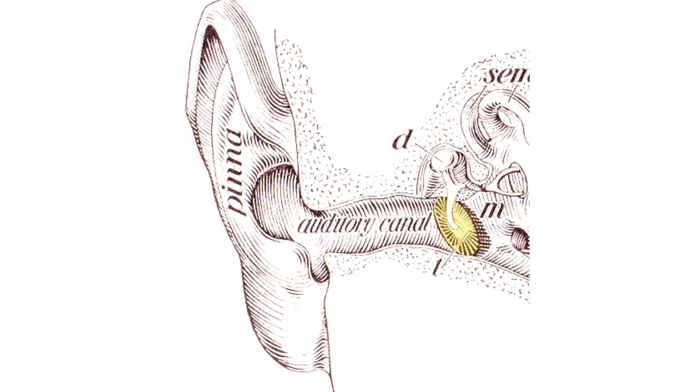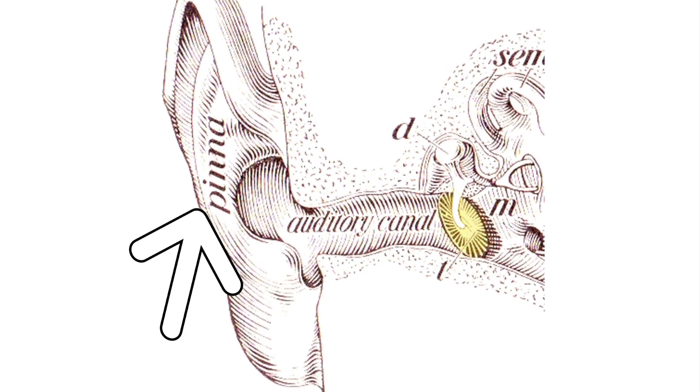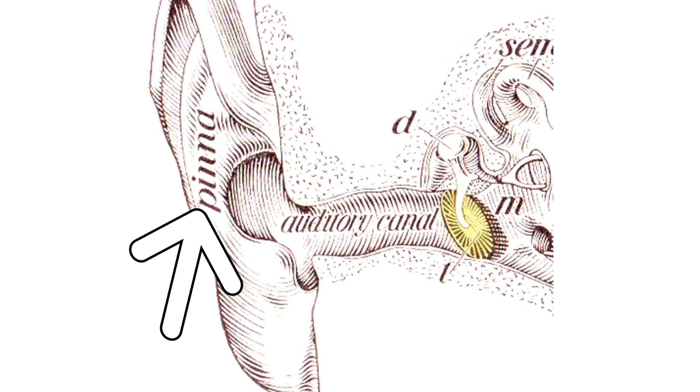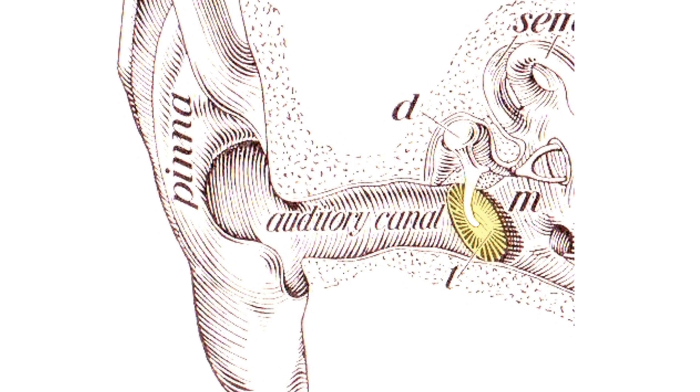When you were young, you learned what your ear was - that floppy, flappy thing on the side of your head. That's not really your ear. That's something called your pinna, which is a part of your ear. Most of your ear is actually inside your head.